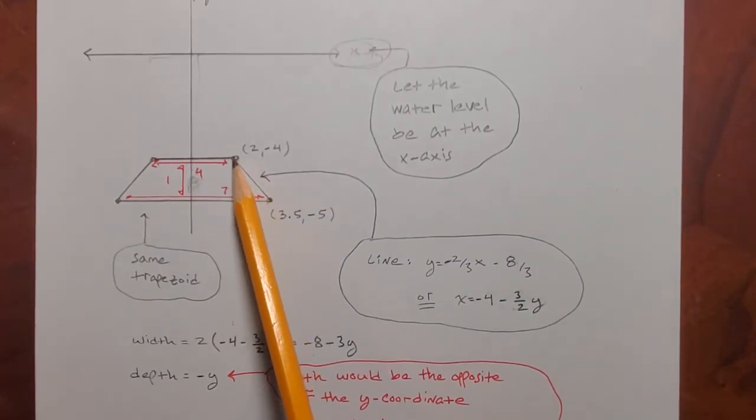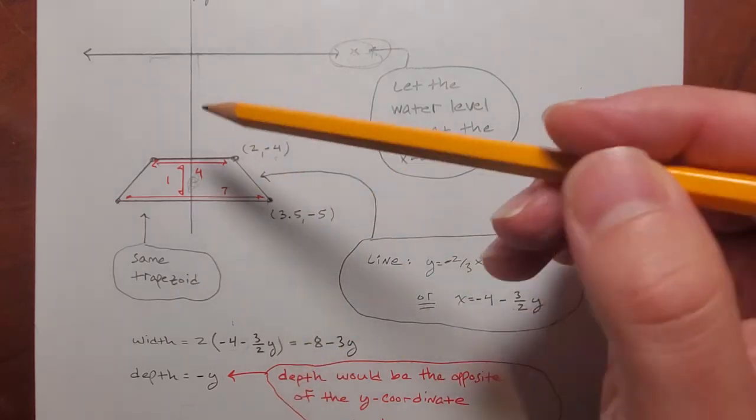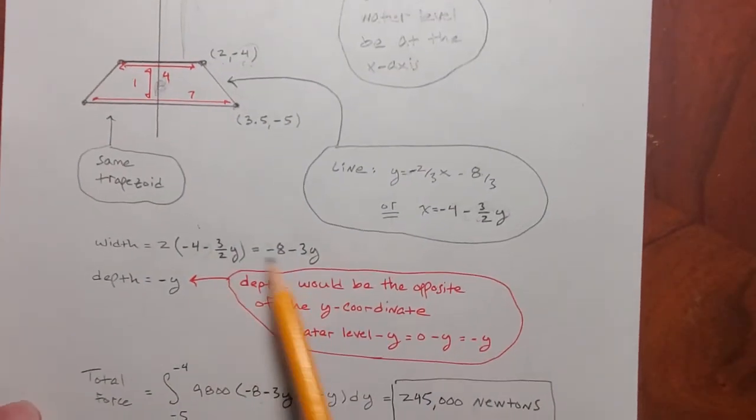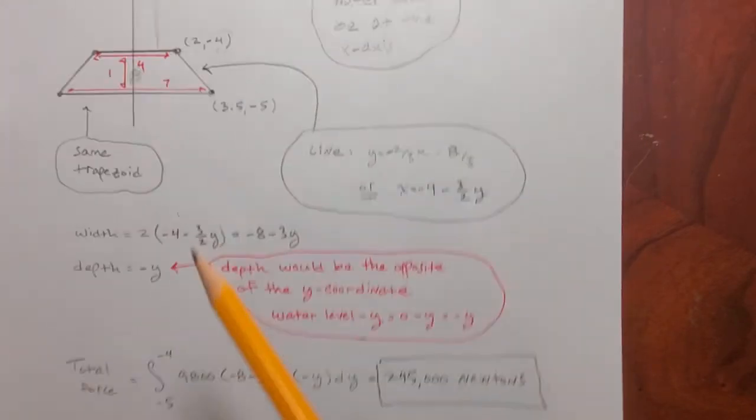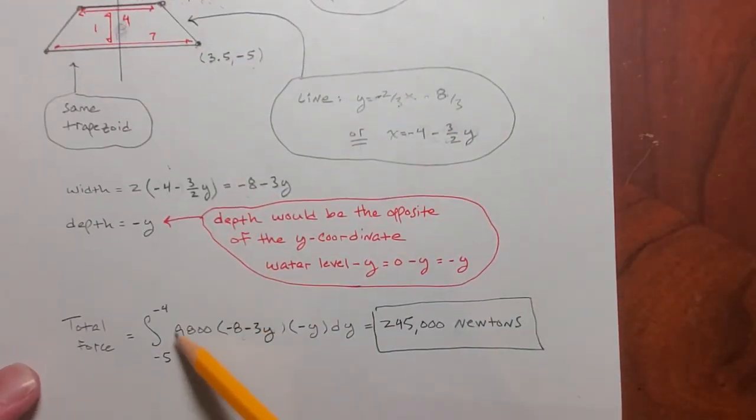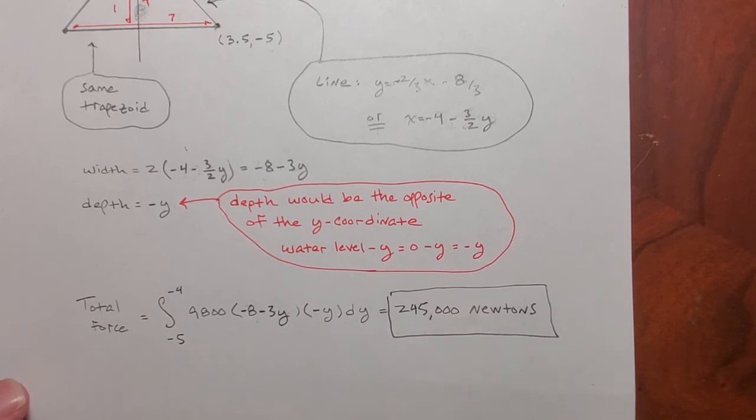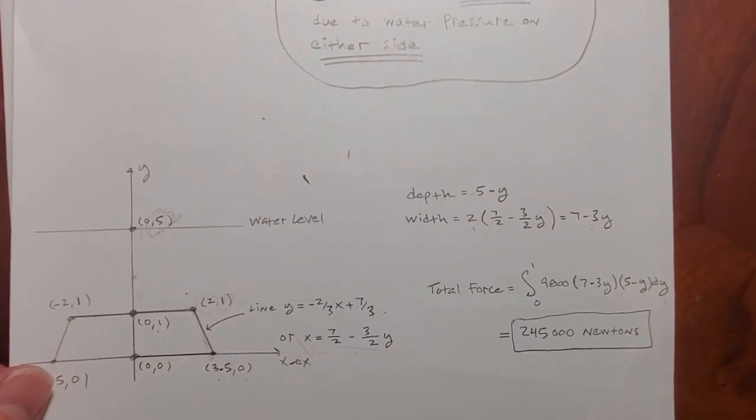What's the y-coordinate at that spot? Negative 4. What's the opposite of negative 4? 4. 4 is the depth. Right? 4 is the depth right there. Okay. So there's my width and depth. Here's my integral. Okay. The object now spans the y-axis from negative 5 to negative 4. And so those are the bounds of the integral. And you get 245,000 newtons for that integral, just like you would have gotten doing it the way I already showed you in the video.